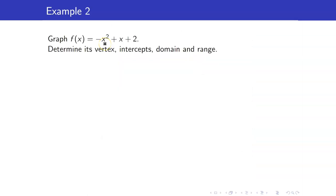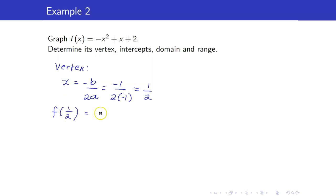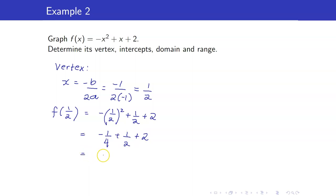Next, we have f(x) equals negative x squared plus x plus 2. Let us compute for its vertex. For the x-coordinate, you have negative b over 2a: that's negative 1 over 2 times negative 1, which equals 1 half. The y-coordinate is f of 1 half: negative of (1 half) squared plus 1 half plus 2. That is negative 1 fourth plus 1 half plus 2, which simplifies to 9 over 4. So our vertex is (1 half, 9 fourths).